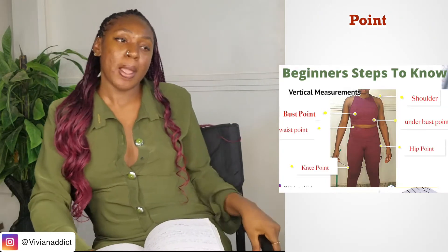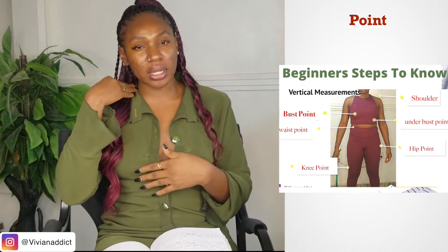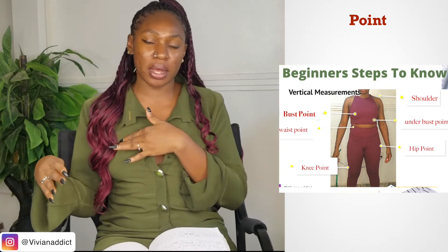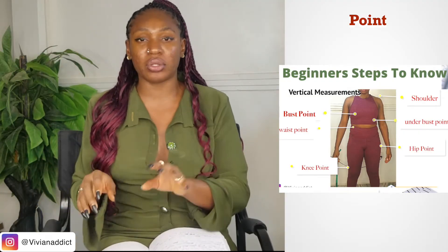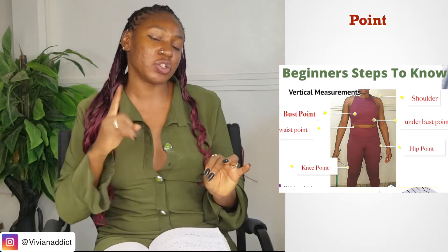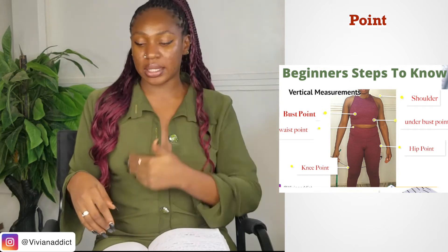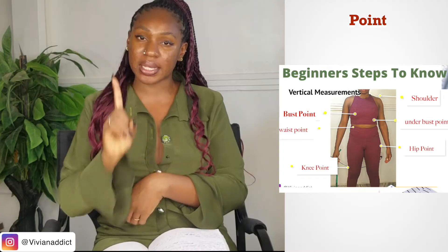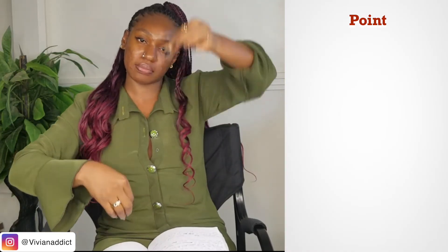Another term is 'points,' which I covered in episode two. Points refer to the vertical measurement of the body — going from the shoulder down to the bust points or other key spots. You place your tape from the shoulder and take the point measurement downward. When making skirts or pants, you take your points down from the waist.